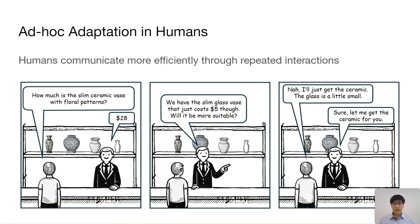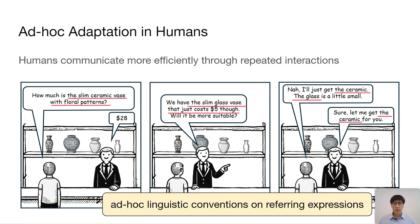Cognitive science has shown that humans communicate more efficiently over time through interactions. Think of a conversation between a customer and a sales assistant. When they initially talk about certain items, they tend to use more elaborate referring expressions to disambiguate them. But as the conversation continues, they will use shorter referring expressions while still understanding each other. They both have adapted to form what's known as ad hoc linguistic convention.